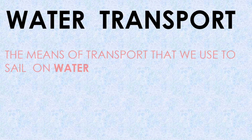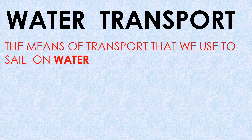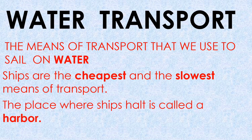Now water transport — the means of transport that we use to sail on water. Ships are the cheapest and slowest means of transport. The place where ships halt is called a harbour. Now examples of water transport.